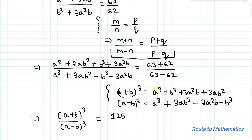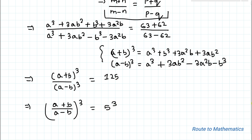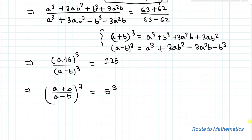63 minus 62 is nothing but 1. So this implies (a + b)/(a − b), whole cubed, equals 125, which can also be written as 5³. Now taking the cube root on both sides, we can write (a + b)/(a − b) = 5.